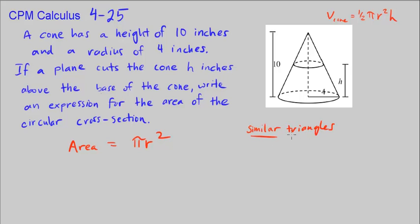Similar triangles must have the property that the ratio of the sides is equal. The ratios of the sides are equal.